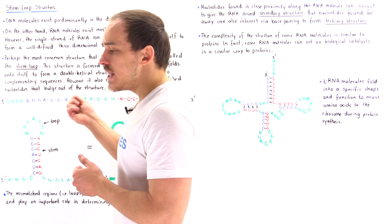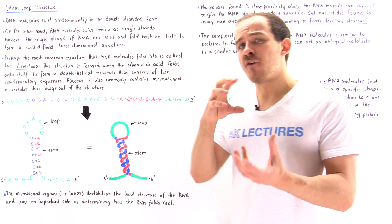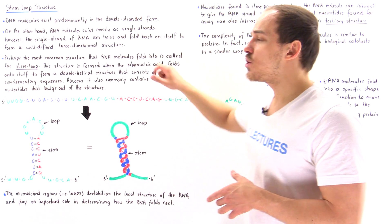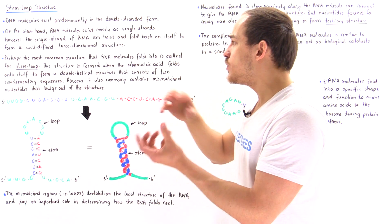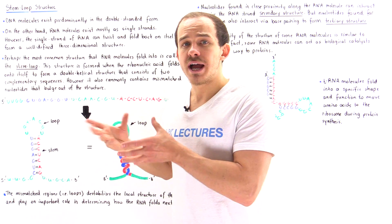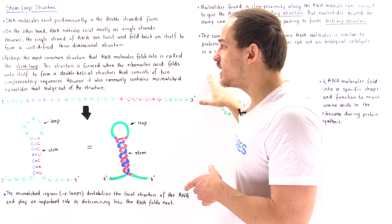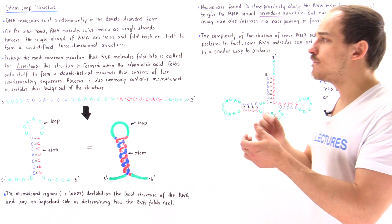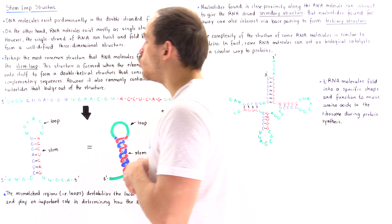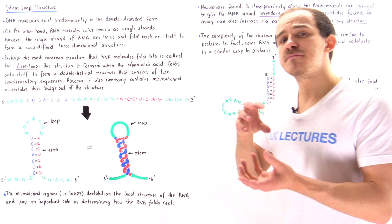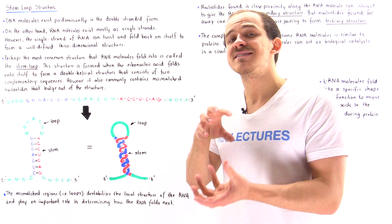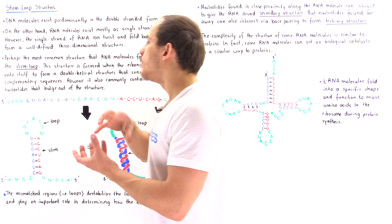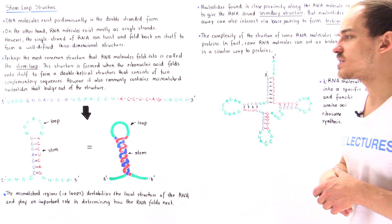The most common type of form that these RNA molecules fold into is known as the stem loop form. This stem loop form is formed when the ribonucleic acid folds into a double helical structure, just like in DNA, in which we have complementary sequences — complementary nucleotides that can form base pairs. But in these stem loop structures, we also commonly contain mismatched nucleotides, and that destabilizes the structure in that localized region and causes the bulging out of that structure.